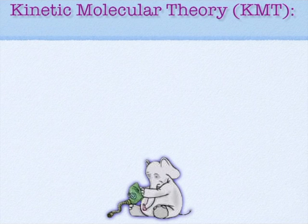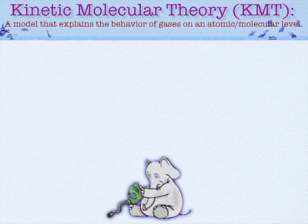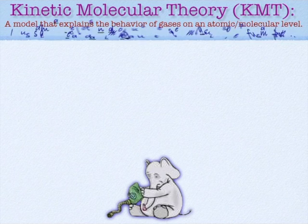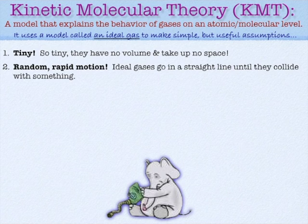That leads us to the kinetic molecular theory. KMT is a great example of a theory — we're trying to explain what we see. The model of a gas is something called an ideal gas. There's no such thing as an ideal gas, as we'll see from the first principle: they're so tiny that they have no volume and take up no space. That eliminates all real gases, but for the sake of modeling, the ideal gas is a pretty great place to be.